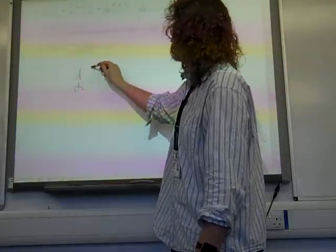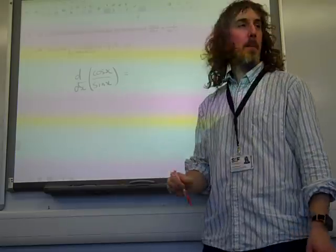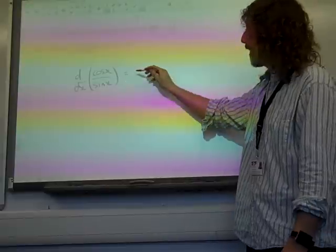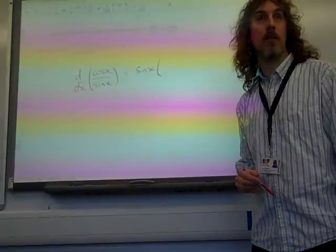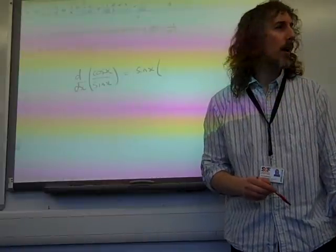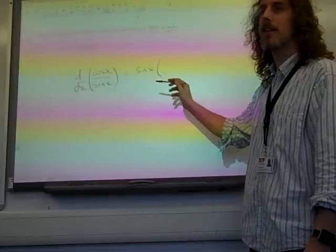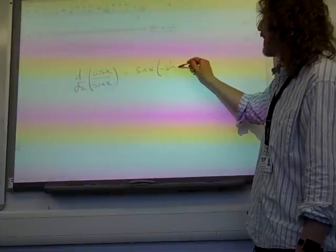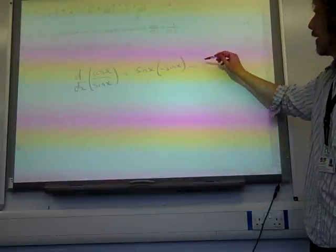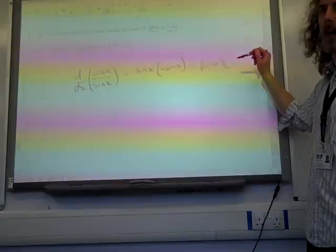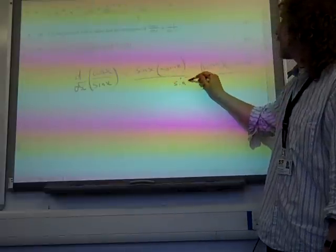So if we're going to differentiate cos x over sine x, we're going to do v times du by dx, and if you differentiate cos you get minus sine x. Minus, that was v du by dx minus u times dv by dx. And if we differentiate sine, we'll get cos all over v squared.